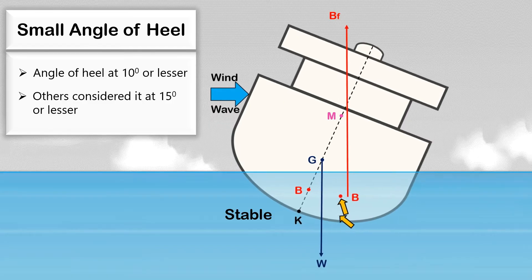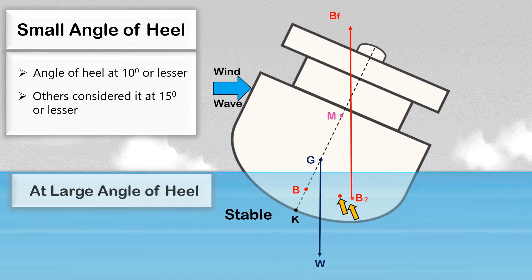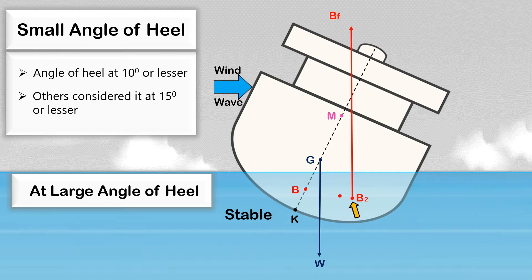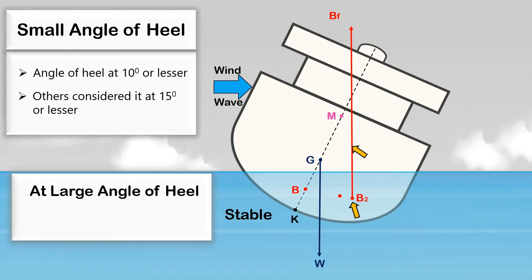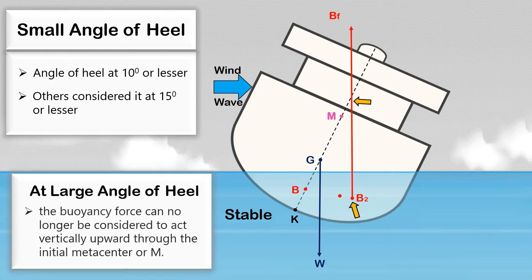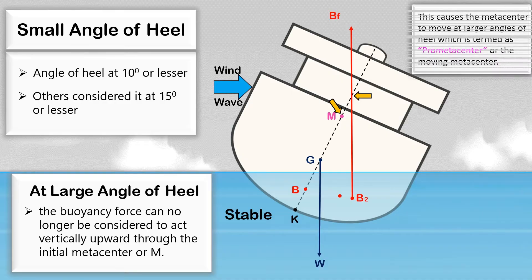When a ship heels further at a large angle of heel — let's say 20 degrees — the center of buoyancy will move further out to the low side, and the buoyancy force can no longer be considered to act vertically upward through the initial metacenter M. This causes the metacenter to move at larger angles of heel, which is termed the pro-metacenter, or the moving metacenter.